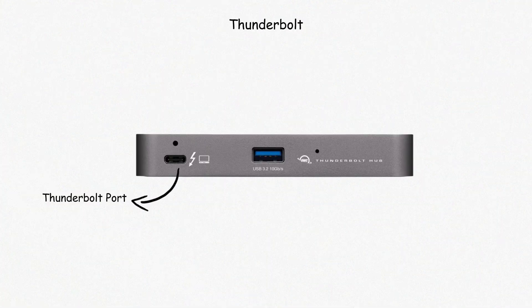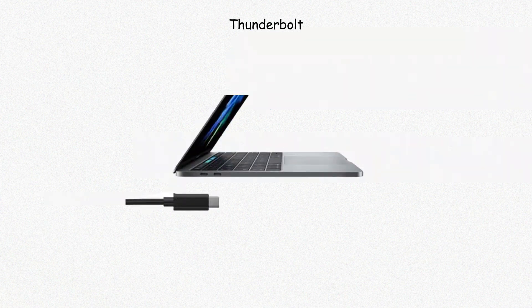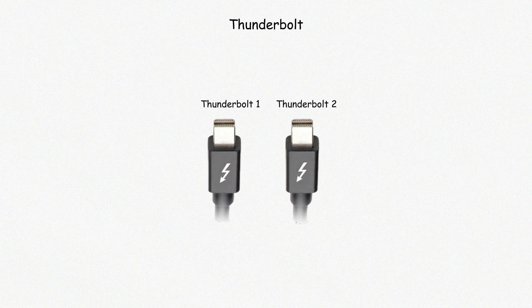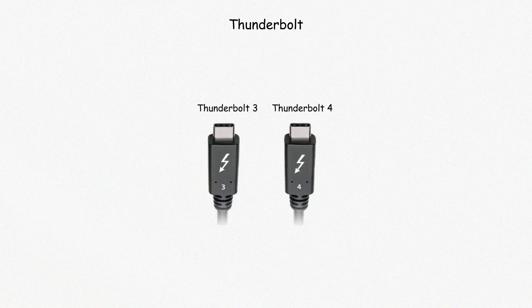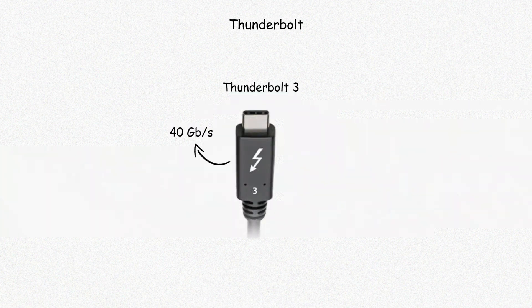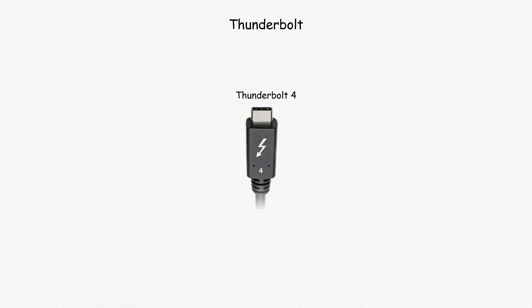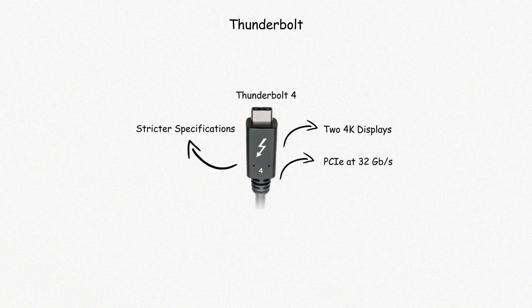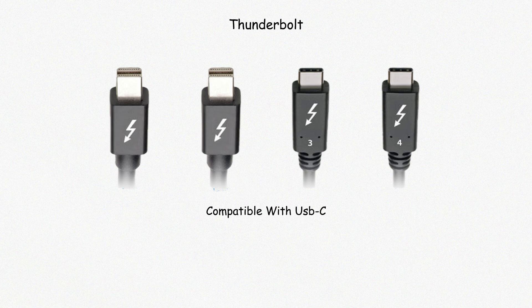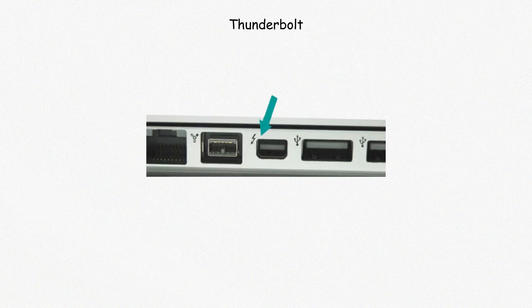Thunderbolt ports are high-speed connections developed by Intel, often found in high-end laptops and desktops. Thunderbolt 1 and 2 use the same connector as Mini DisplayPort, while Thunderbolt 3 and 4 use USB-C. Thunderbolt 3 supports up to 40 gigabits per second and allows data, video, and power simultaneously, connecting to high-speed storage, 4K or 5K displays, and external GPUs. Thunderbolt 4 has the same speed but requires stricter specifications, including support for two 4K displays and PCIe at 32 gigabits per second. Thunderbolt ports are backward compatible with USB-C, but not all USB-C ports support Thunderbolt. Devices and cables must be certified for full Thunderbolt performance. Look for the lightning bolt icon near the port to confirm Thunderbolt support.